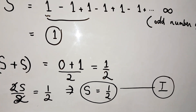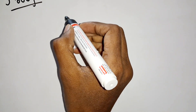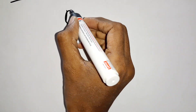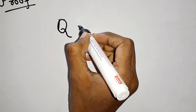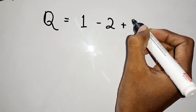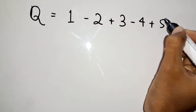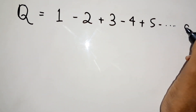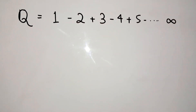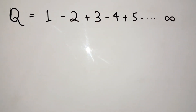Now next we can assume another series, say Q. Q equals 1 minus 2 plus 3 minus 4 plus 5 and so on up to infinity. This is also an infinite series. Our main aim is to find 1 plus 2 plus 3 up to infinity equals minus 1 by 12 — we have to prove it. But for that, previously we took S = 1 minus 1 plus 1 up to infinity, and now we are taking Q = 1 minus 2 plus 3 minus 4 plus 5 up to infinity.